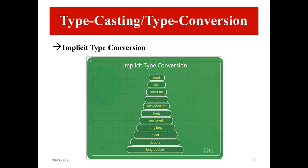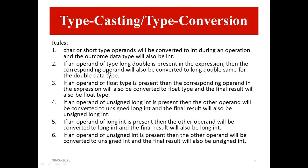There are some rules for implicit typecasting. First rule: a char or short type operand will be converted to int during an operation, and the outcome data type will also be int. Second rule: if an operand of type long double is present in the expression, then the corresponding operand will also be converted to long double.